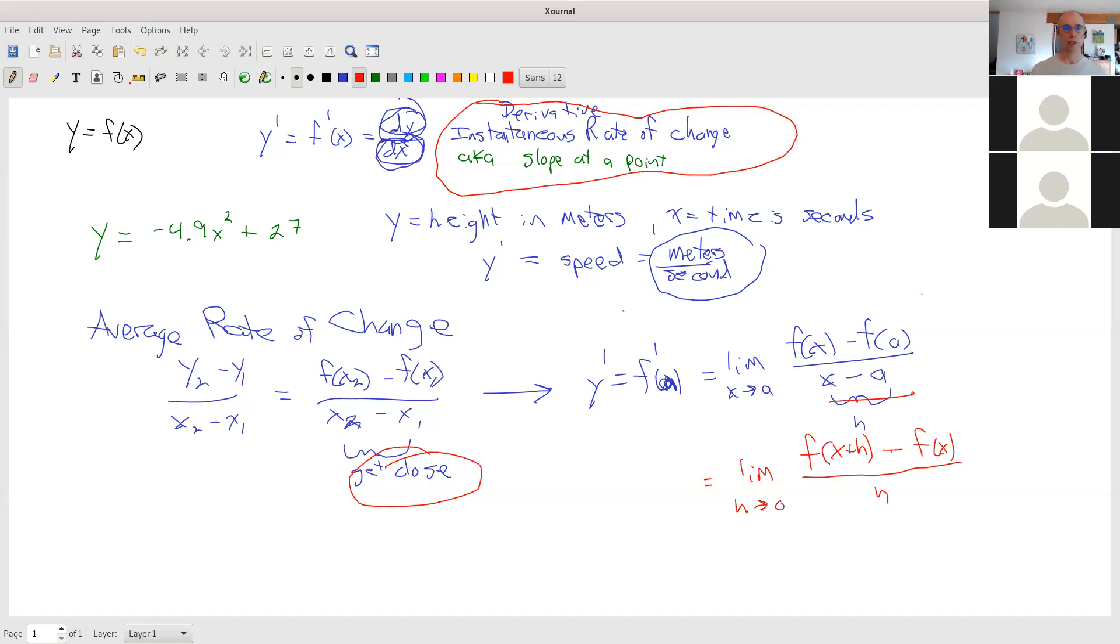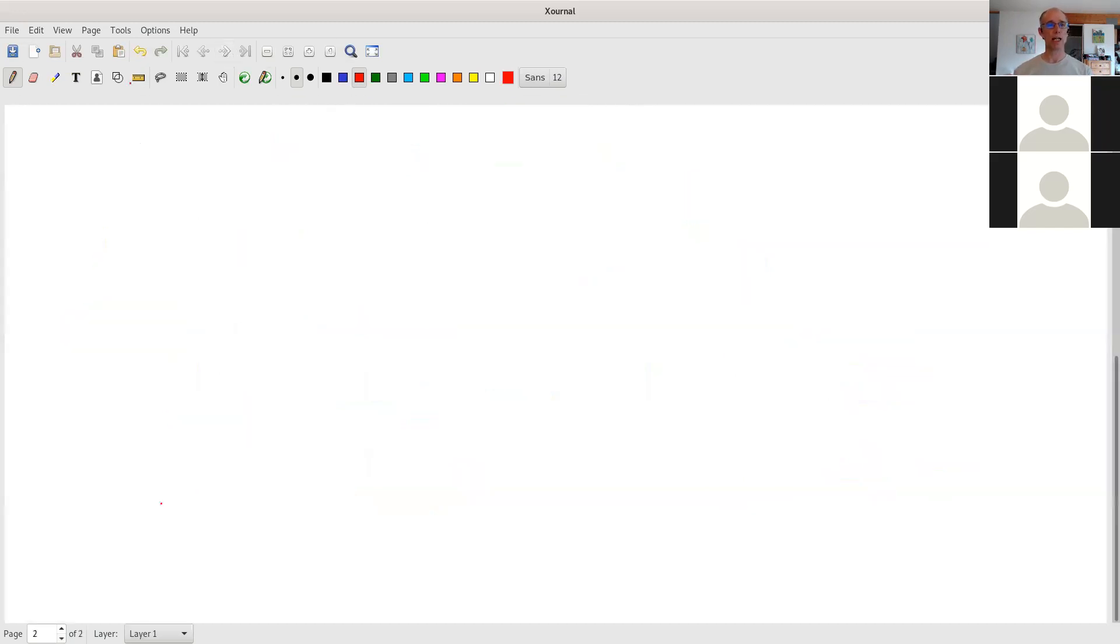And so in this section here, section 3.4, we're going to take a look more at rates of change, of which we have both average and instantaneous. Other circumstances where we're curious about rates of change, so for sure one of the most popular rates of change in our lives is speed.